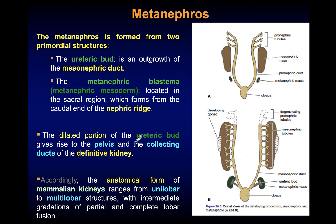Now we reach the metanephros — the definitive kidney. The pronephros and mesonephros disappear and atrophy. At the level of the distal mesonephric duct, there is an outgrowth called the ureteric bud. This ureteric bud grows toward the intermediate mesoderm in the sacral region, inducing the metanephric mass to differentiate and form the nephrons.